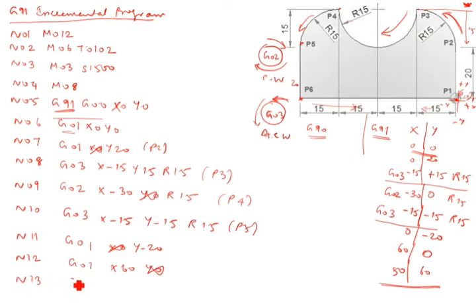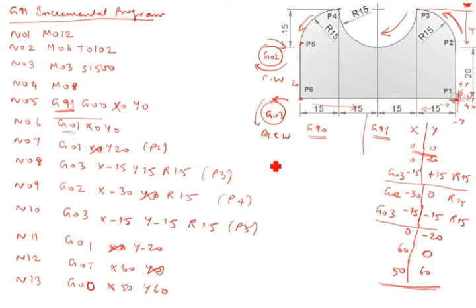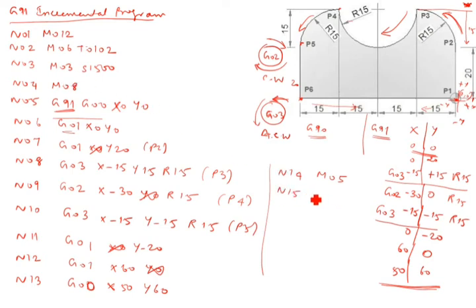N13: Z01, X50, Y60. M05 — M05 is spindle off. M03 is spindle on, M05 is spindle off — we have to turn off the spindle. N15: M09 — M09 is coolant off. N16: M30 — M30 is end of the program.